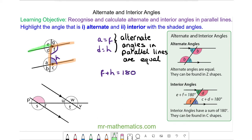D and A are also interior. So D and A again is equal to 180 degrees.